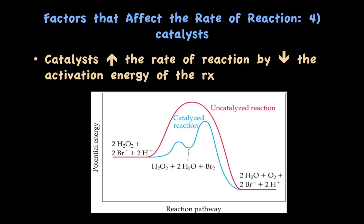The fourth factor that affects the rate of a reaction is catalysts. If I add a catalyst to a system, I can increase the rate of reaction by decreasing the activation energy. The pathway in red on this potential energy diagram is an uncatalyzed reaction, showing the pathway reacting particles must go through to change into products — look at how high that activation energy is. If I add a catalyst, shown by the blue line, the activation energy is lowered and a totally new pathway is established. By lowering the activation energy, reacting particles are able to collide with that lower sufficient energy to change into products.